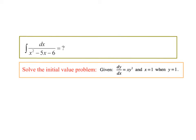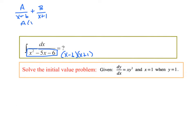I'm going to do some factoring here. x squared minus 5x minus 6 would factor to be (x minus 6)(x plus 1). So we've got A over (x minus 6) plus B over (x plus 1). We find the common denominator, so A times (x plus 1) plus B times (x minus 6) equals just the numerator, which was 1.